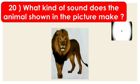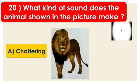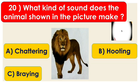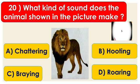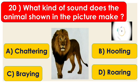Question number 20: what kind of sound does the animal shown in the picture make? Options are A. Chattering, B. Hooting, C. Braying, and D. Roaring. First identify the picture — this is a picture of a lion. The lion roars, so the correct answer is option D, Roaring.